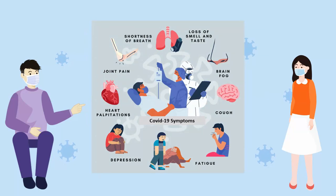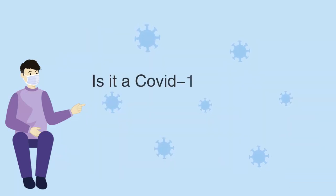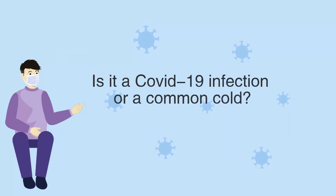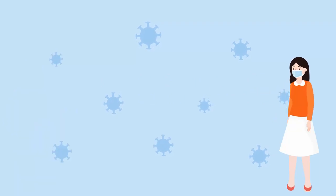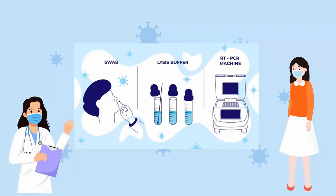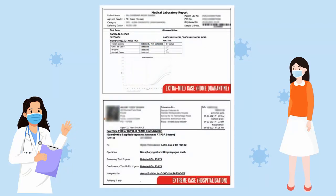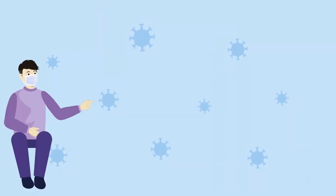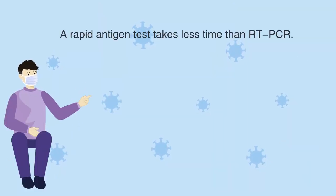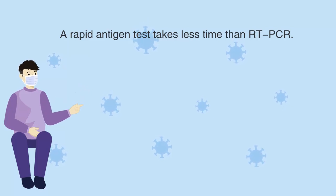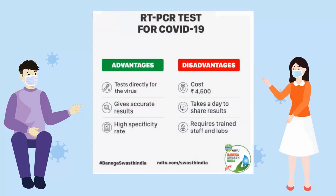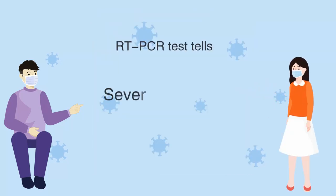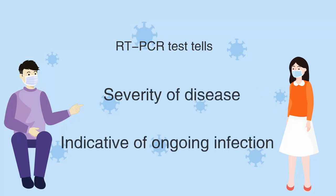How do you know it's a COVID-19 infection and not a common cold? Since COVID-19 and the common cold have similar symptoms, it's best to consult a doctor and get an RT-PCR test done upon their recommendation. Until the tested person gets an RT-PCR report, they must stay isolated. Though an RT-PCR takes longer, it tells you about the severity of the disease and is indicative of an ongoing infection.